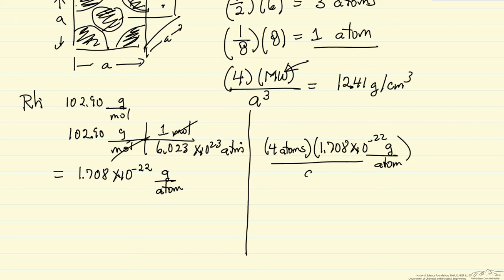Times the grams per atom, divided by the volume, 12.41 grams per centimeter cubed. So I could solve for a cubed.